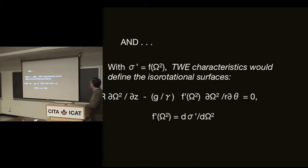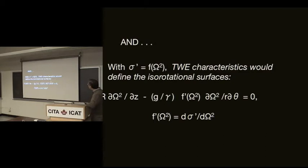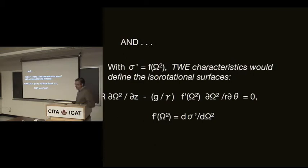If we could actually do that, omega and sigma prime would then share isosurfaces in common — gradients would be in opposite directions, surfaces would be the same. Sigma prime would be a function of omega squared — we don't know what f is, just some function. And if sigma prime is some function of omega squared, that's the thermal wind equation — the name of the equation I've been using, well known in geophysics. The thermal wind equation characteristics would define the isorotational surfaces. Sticking in sigma prime as a function of omega squared, I get one differential equation for one unknown: omega squared.